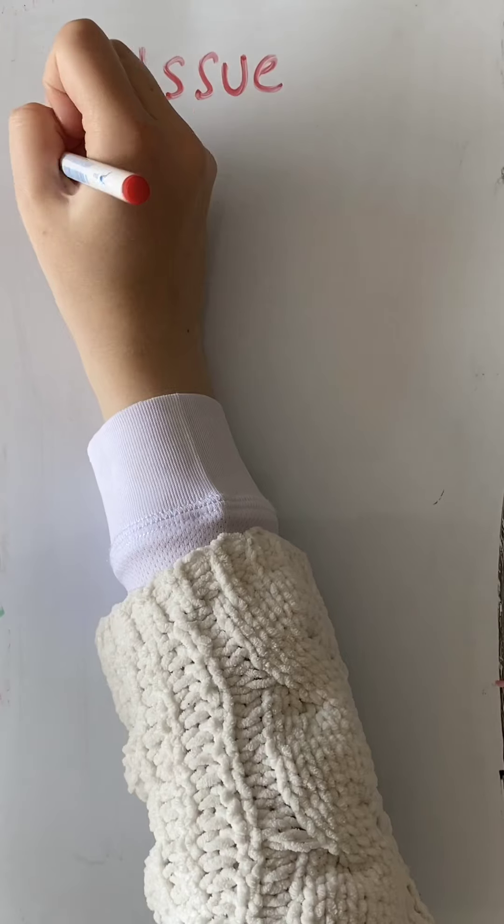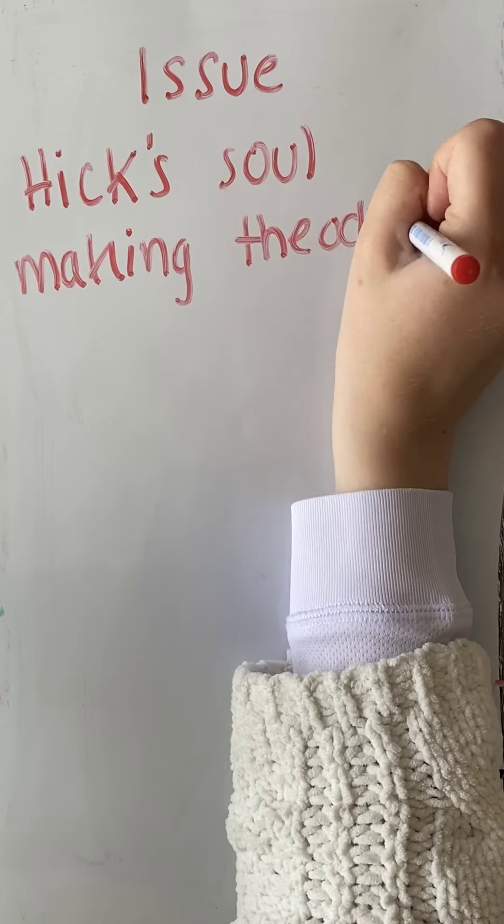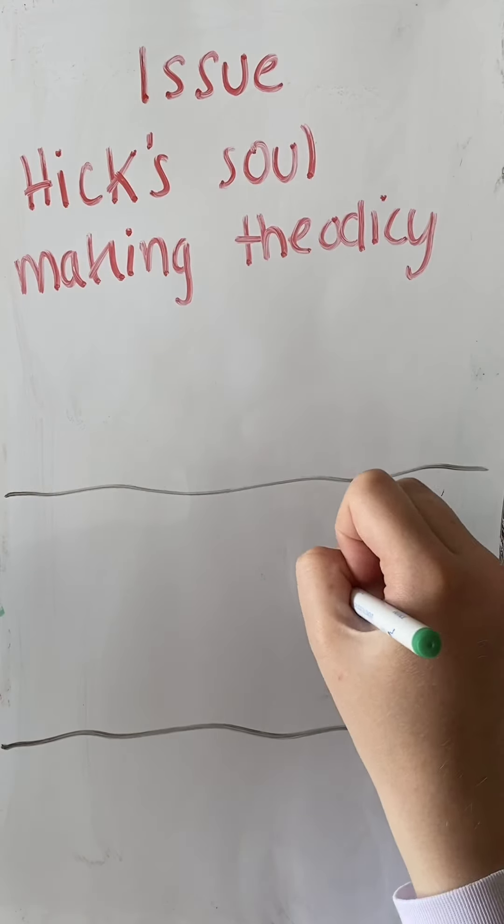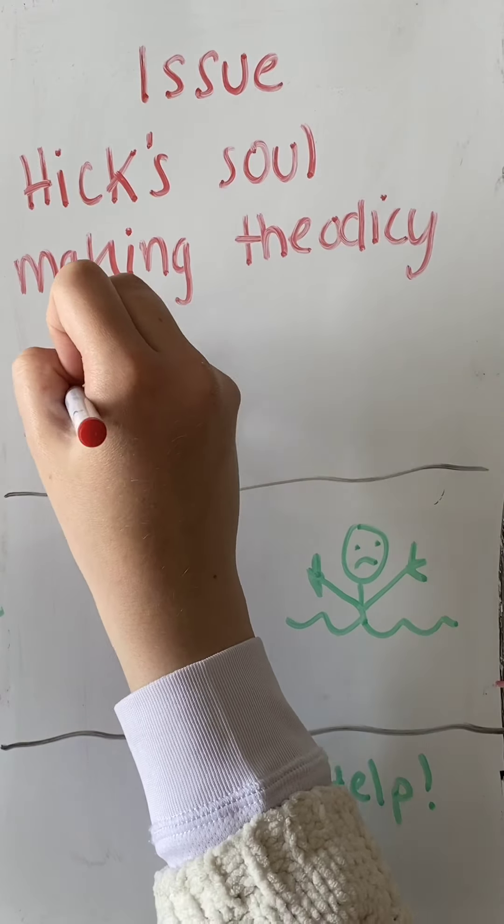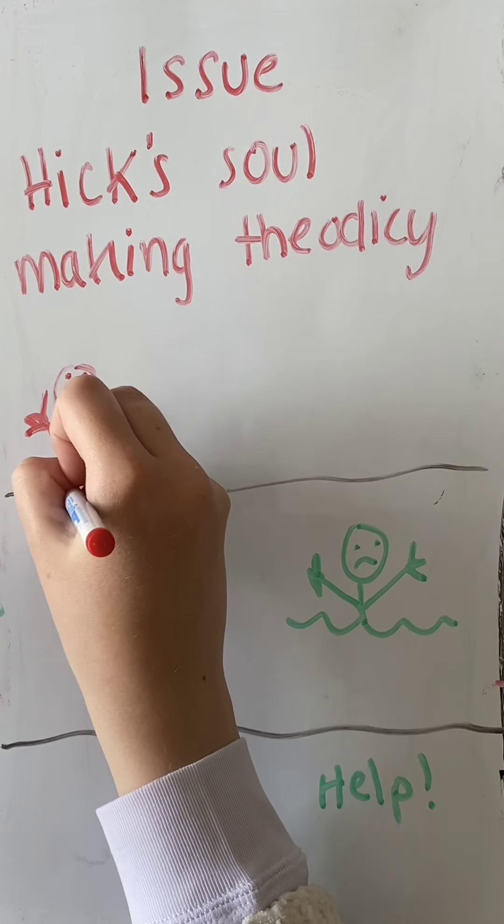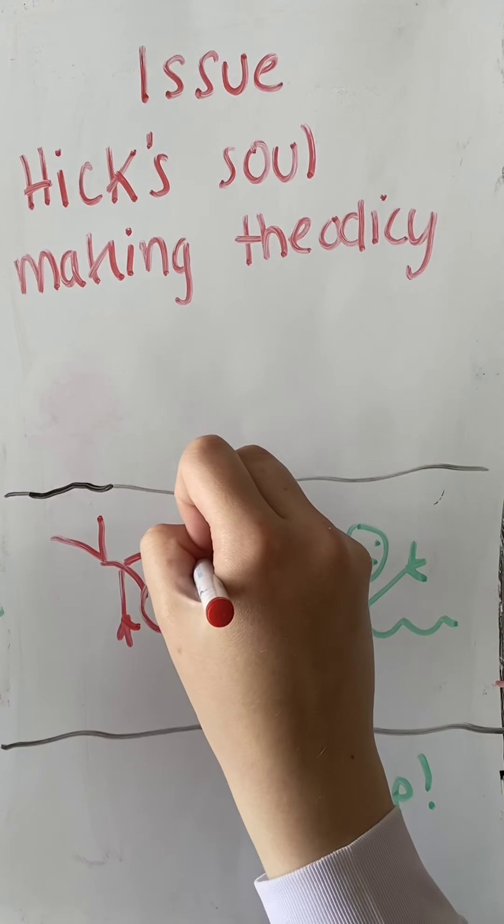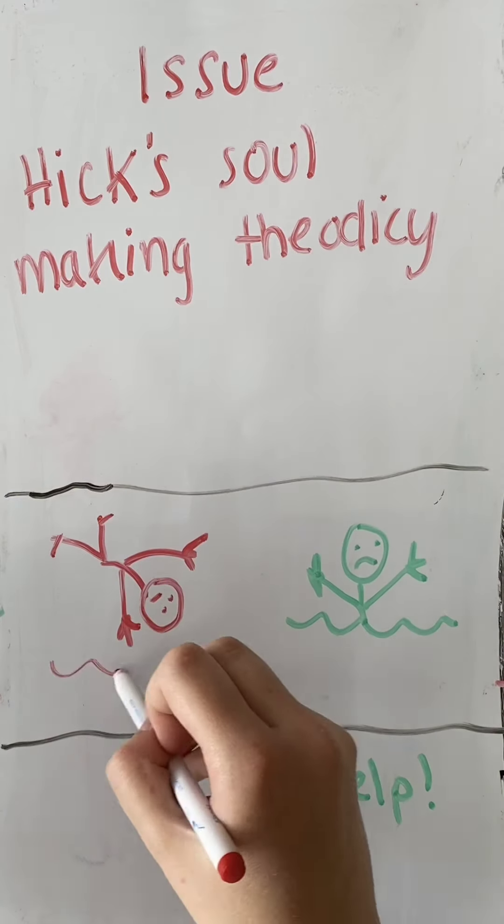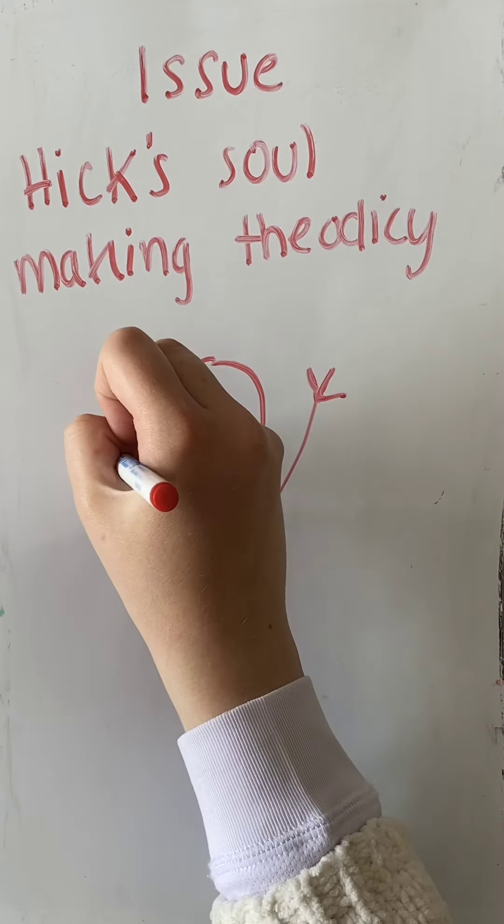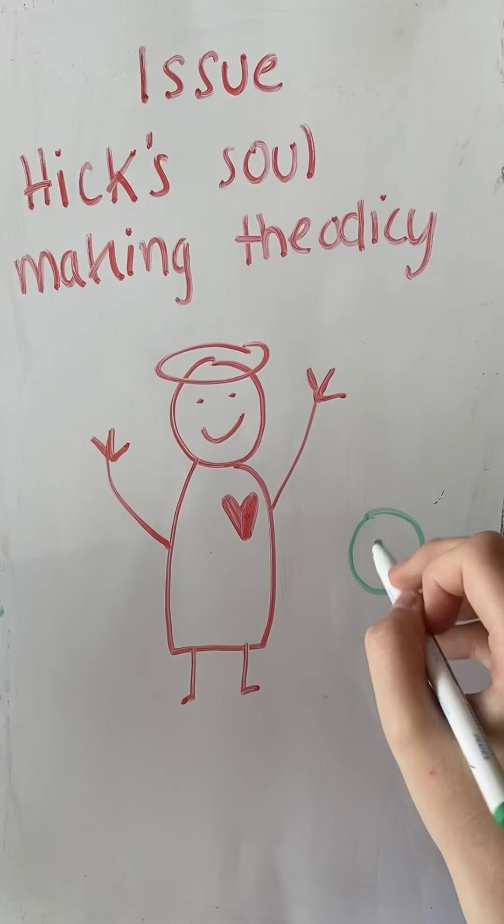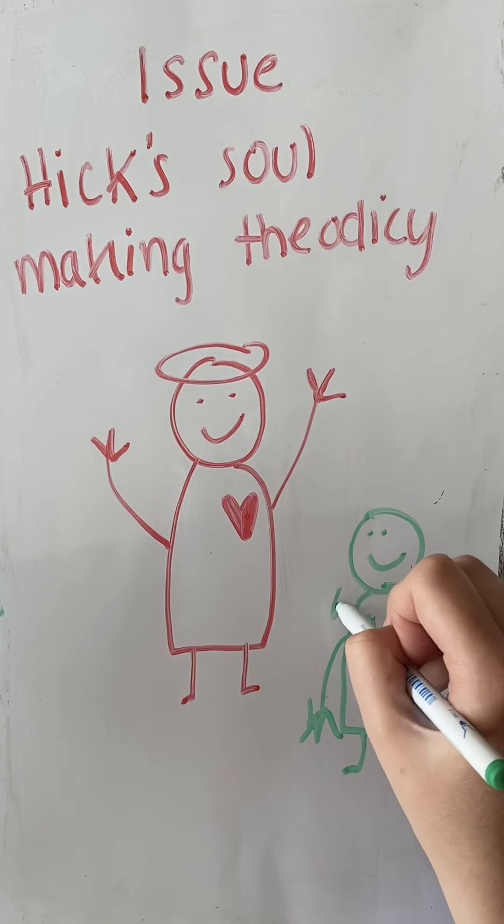One issue with the evidential problem of evil is John Hick's soul-making theodicy. Hick asks why God created humans as imperfect, but he presumes there must be a reason for this as God is supremely good. Hick explains that pain and suffering enables our moral and spiritual development, as responding to evils allows us to make decisions which develop our virtues. For example, forgiveness is a response to the evil of dishonesty. He says that acquiring these virtues through hard work allows them to be genuine and makes them more valuable.